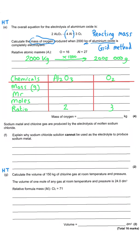We need to put in our mass of aluminium oxide — 2 million grams. The grid method leads you to the next step: the MR row means we work out the relative formula masses of our two substances. For Al₂O₃: two aluminiums (27 × 2) plus three oxygens (3 × 16) gives an MR of 102 g/mol. For O₂: 16 + 16 gives an MR of 32 g/mol.